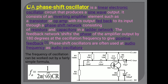You can see the diagram of the phase shift oscillator. The frequency of oscillation can be found using the formula: F₀ = 1 / (2π√(6CR)), where C is the capacitance of the capacitor connected to the oscillator and R is the resistance of the resistor connected across the oscillator. So the frequency of oscillation of the phase shift oscillator is F₀ = 1 / (2π√(6CR)).